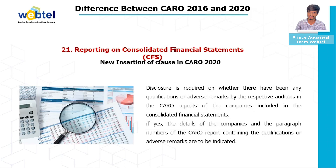Clause twenty-one, the last clause of CARO 2020, is about Reporting on Consolidated Financial Statements — also a new inserted clause. Disclosure is required on whether there has been any qualification or adverse remark by the respective auditor in CARO reports of companies included in the consolidated financial statement. If yes, the details of the companies and the paragraph numbers of the CARO report containing the qualification or adverse remark are to be indicated.